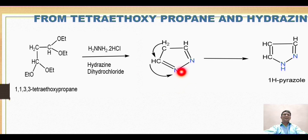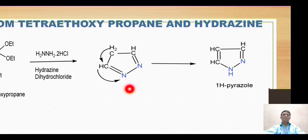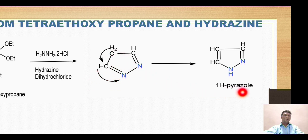The intermediate is a 4H-derivative and must be converted to the more stable 1H form. Once again, migration of the hydrogen takes place — the hydrogen ion migrates and the bonds shift — ultimately giving the formation of 1H-pyrazole.